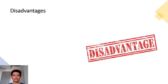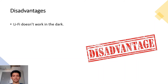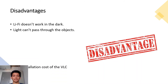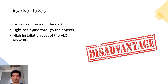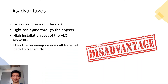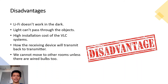The disadvantages of Li-Fi include that it doesn't work in the dark, which is its main drawback. Li-Fi cannot pass through objects. There is a high installation cost of the VLC system. A major challenge is how the receiving device will transmit back to the transmitter. Unlike Wi-Fi, with Li-Fi you cannot move to other rooms unless those rooms also have wired bulbs.